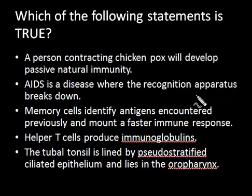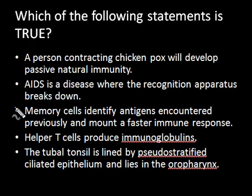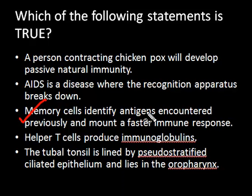The third statement: memory cells identify antigens which have been encountered previously, and they mount a faster immune response. This is true, because this is the function of memory cells. They keep the knowledge of antigens which have been encountered previously, and the next time they come in contact with the antigen, they mount a faster immune response. So this is the true statement.